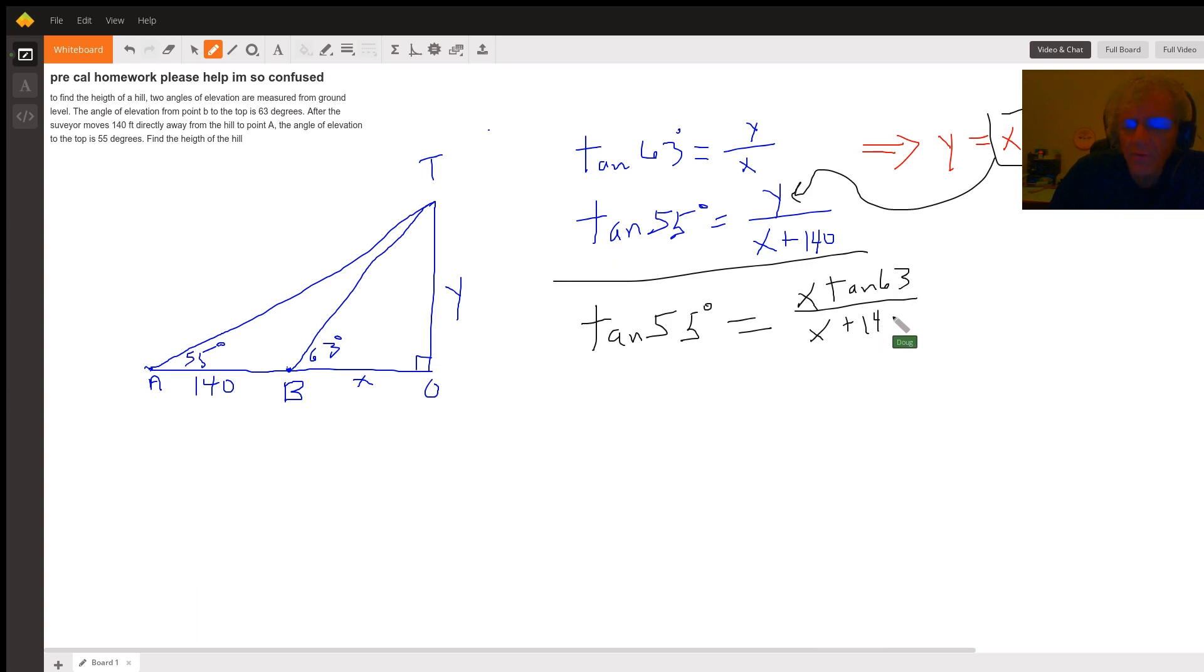Now the problem with doing it this way is that once we've found the value for x, we'll still have to go back and solve for y. So once we found x, we put that in here for x times the tangent of 63 to get the value of y. And that's probably easier than isolating the y or the x to begin with, because it gets pretty complicated.